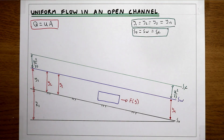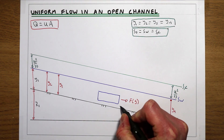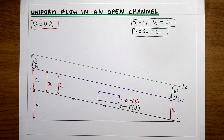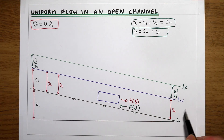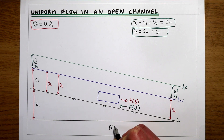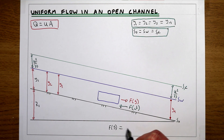What's also acting in this channel is a resistance force — a friction force at the bed. We know that if the flow is uniform, the depth is the same all the way through the channel, meaning velocity is constant. If velocity is not changing — not accelerating — then the force from gravity due to the gradient must be equal to the force from friction.